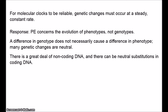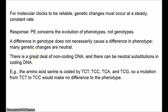Even in DNA that does code for proteins, mutations can be neutral — this is because of the degeneracy of the genetic code. Proteins are built out of amino acids, and a sequence of three nucleotides called codons corresponds to each amino acid. There are 64 possible codons but only 20 amino acids, so different codons code for the same amino acid. For instance, amino acid serine is coded by TCT, TCC, TCA, and TCG. A mutation from TCT to TCC makes no difference to the phenotype.